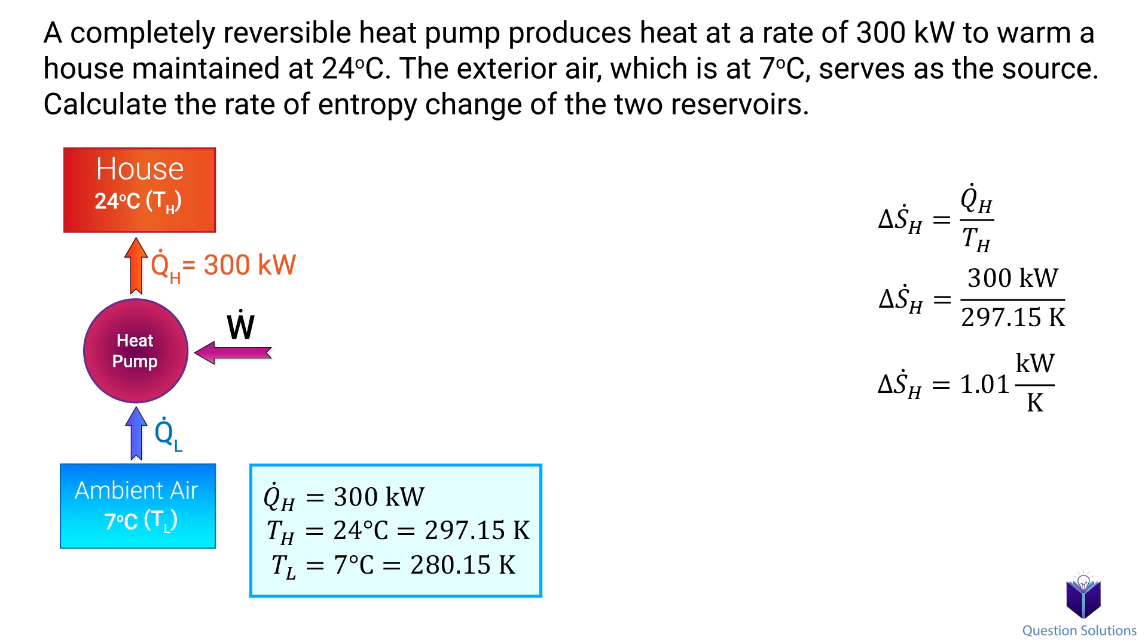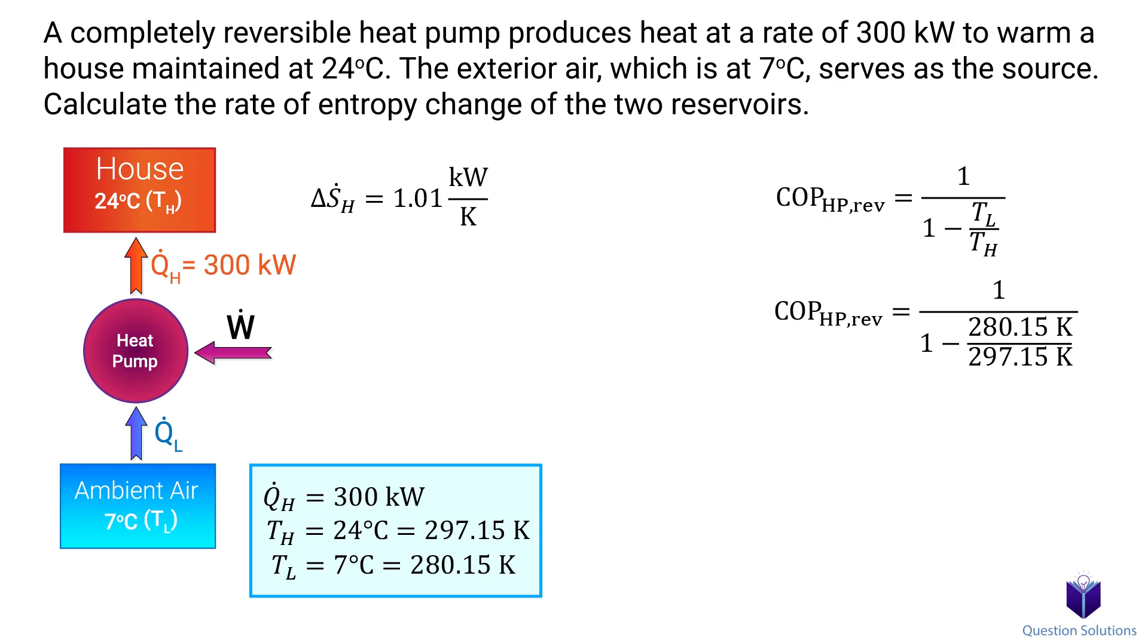Now to find the entropy change in the outside air, we need to figure out QL. To figure that out, we first need to figure out the COP of this heat pump. For that, we can use this equation. This should be familiar to you from the previous video about Carnot heat pumps. Solving gives us the COP.